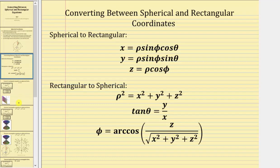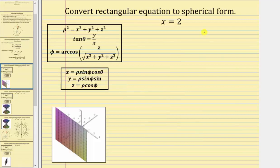Let's take a look at our first example. We're asked to convert the rectangular equation x equals two to spherical form. The graph of x equals two is shown below, which is a plane in 3D. To write the equation in spherical form, we need to eliminate the variable x and only use the variables rho, theta, and phi. We'll use the first equation to perform a substitution for x, where x equals rho sine phi cosine theta. Performing this substitution gives us rho sine phi cosine theta equals two.